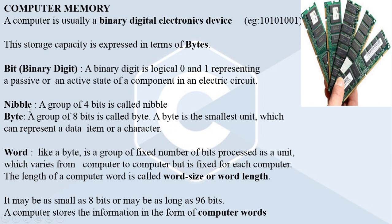Next is the nibble. A nibble means a group of 4 bits. A single bit can represent either a value 0 or 1, and such 4 bits together are known as a nibble. The 4 bits can each take value 0 or 1. Then, a byte means a group of 8 bits. A byte is the smallest unit of computer memory representation, representing a group of 8 bits. A byte is used for representing data and characters inside a computer memory.